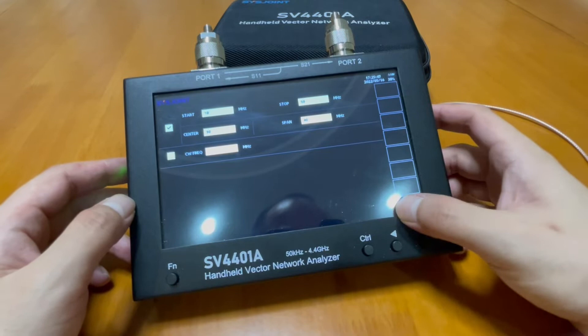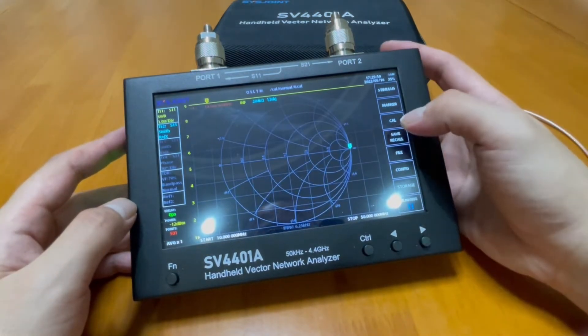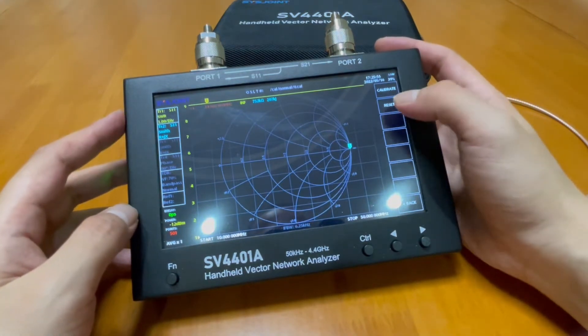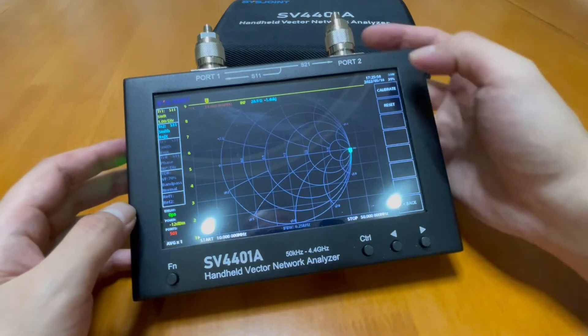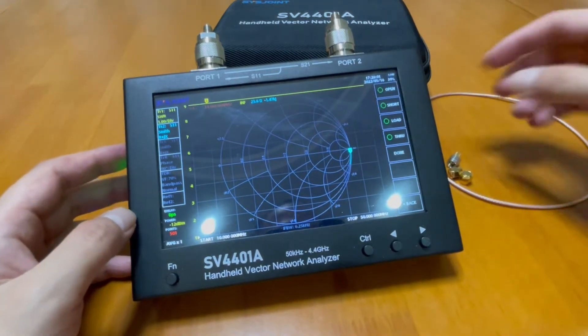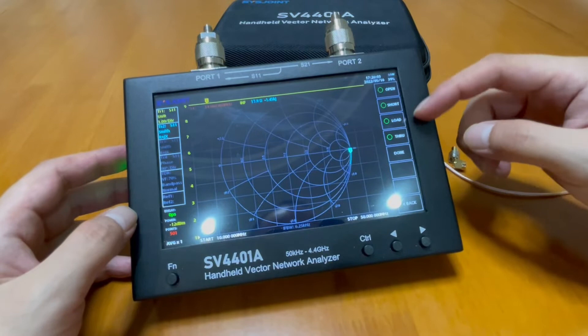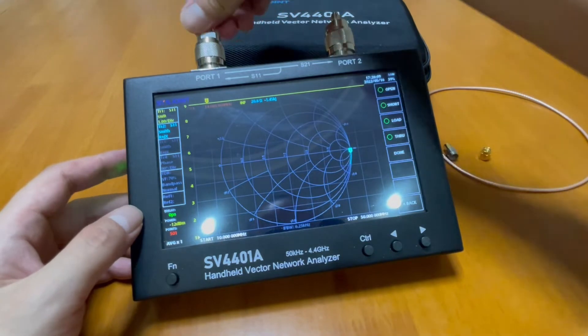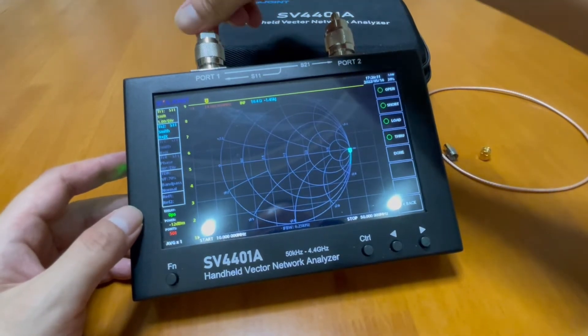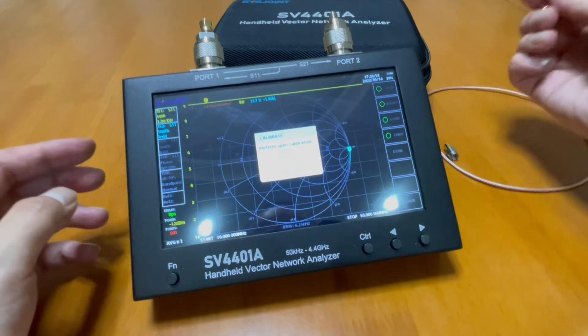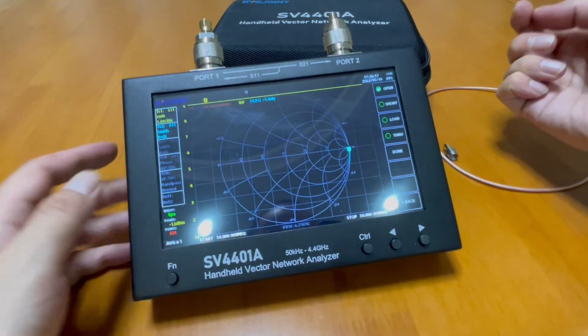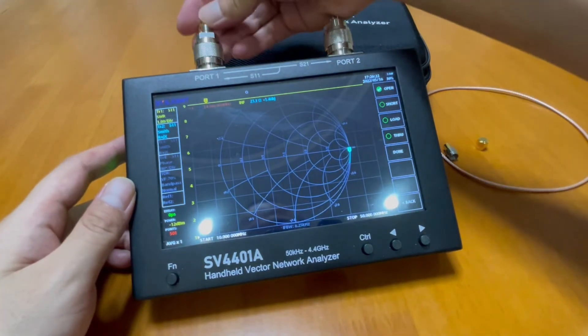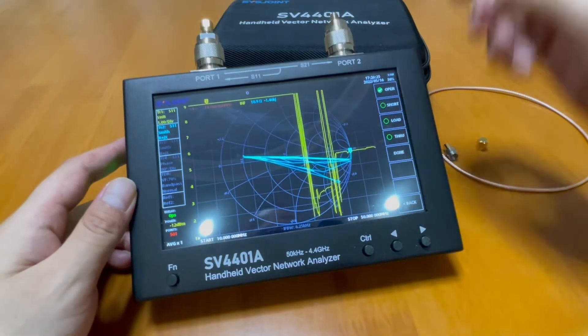We go back and we can start calibration by clicking on cal, which is calibration. Notice we need to click reset to make everything from zero again and calibrate. Now we're going to follow each of the options and do each of them. For the open, we put open to port 1 and click open, and same process with short and load. When you hear the beep, it means the process is done.